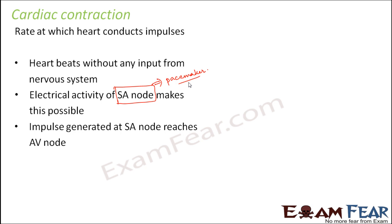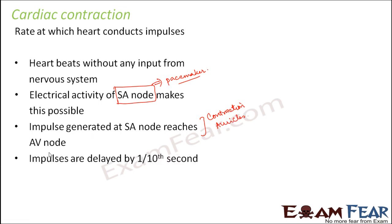As soon as the impulse gets generated in the auricles, it sends a signal to the auricles to contract. So this causes a contraction of the auricles. After this, the signal from the AV node passes through the AV bundles and then through the bundle of His. The impulses which reach down to the ventricles are delayed by almost one tenth of a second, and this delay is contributed by the AV node. That is the function of the AV node — it relays as well as delays the impulses.